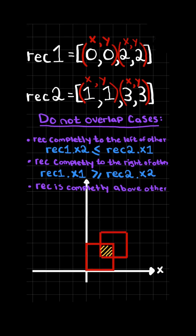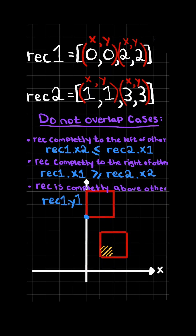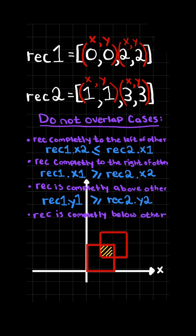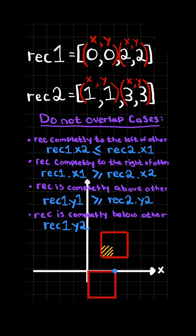Another condition where they don't overlap is when one rectangle is completely above the other — when the bottom left y coordinate of rectangle one is greater than or equal to the top right y coordinate of rectangle two. The last condition is when one rectangle is completely below the other — when the top right y coordinate of rectangle one is less than or equal to the bottom left y coordinate of rectangle two.